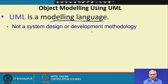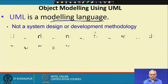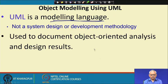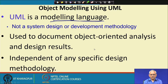UML is just a language. We need to learn the language and we will also discuss a methodology for designing. We will use UML as the language to document the design, but the design will be obtained using a design methodology, and we will use UML as documentation for that design. One good thing about UML is that it is independent of any design methodology.